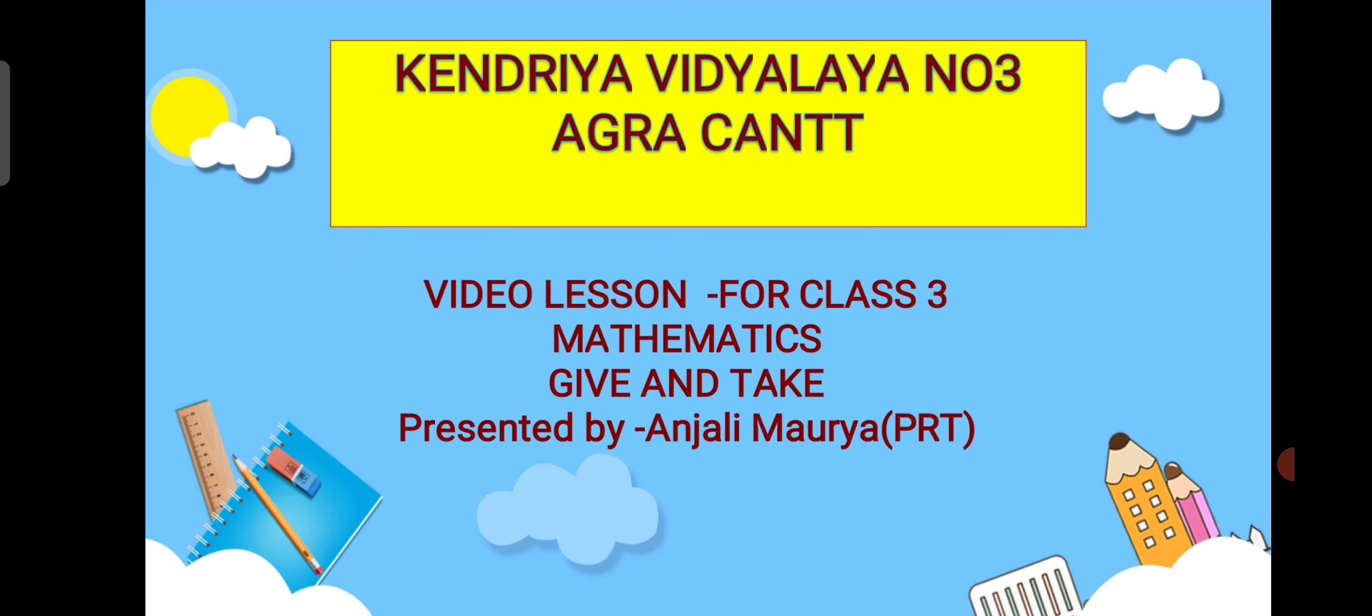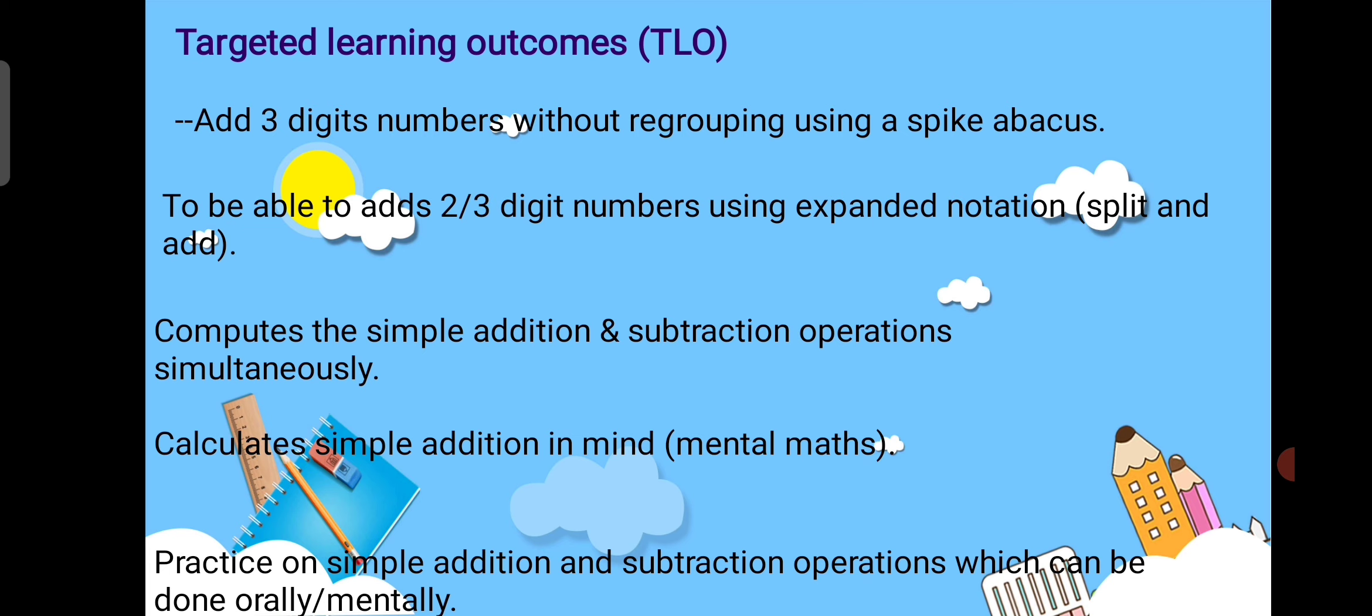So let us start. Before starting, let us see some targeted learning outcomes, TLO. Add three digits number without regrouping using a spike Abacus.